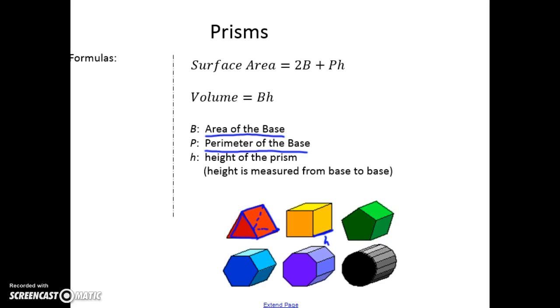Volume is how much paint you would need to fill the prism — if you were to pour paint into the prism until it was full like a paint can. The volume would be the area of the base times the height.